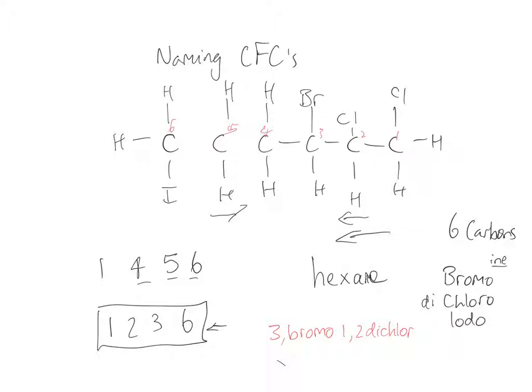And we're now looking at the last group, which is our iodine, iodo, on carbon 6. 6-iodo. And we knew there was 6 carbon, so hexane is our final part.